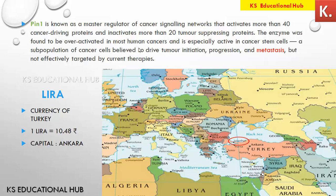To defeat PIN1, arsenic combined with another drug is being researched and may in future be used in treating cancer. PIN1 is an enzyme — enzymes act like regulators in our bodies. This PIN1 enzyme was found to be over-activated in most human cancers, making it a key target for cancer therapy.